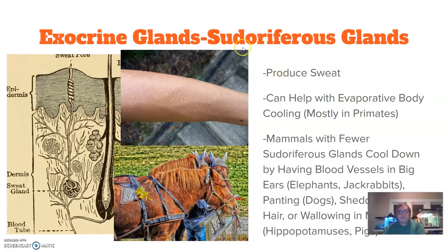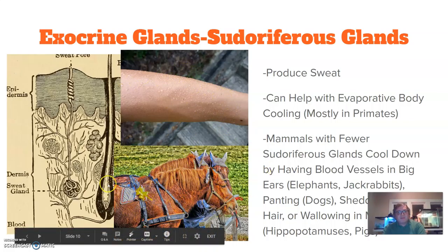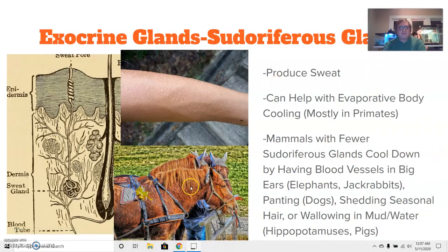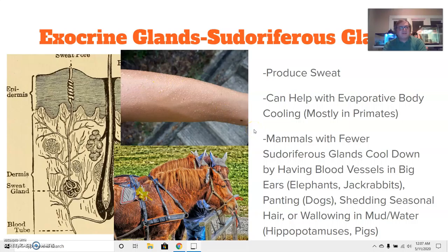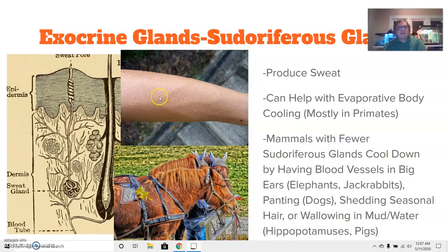Finally, we have the sudoriferous glands, which produce sweat. You can see the pores on a human being. Horses are another good example of an animal that sweats quite a bit, shown here with sweat accumulating on their fur. Sweat helps with evaporative body cooling, mostly seen in primates which have less hair in certain areas. The sweat gland opens into a pore on the skin, and as breezes pass over the released liquid, heat is wicked away from the body. Since mammals produce their own body heat, this system helps them cool down.